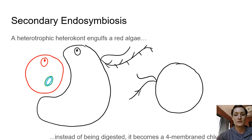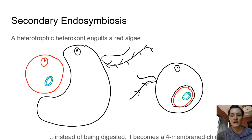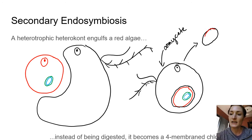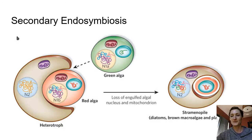The oomycete engulfs the red algae but doesn't digest it. The only thing the oomycete is interested in is the chloroplast, so all the other components of the red algae degrade. What we're left with is a four-membrane chloroplast. The outer membrane comes from the oomycete that ingested the red algae, giving us four membranes: the cyanobacterial membrane, the membrane from the thing that ate it, and then the thing that ate that.